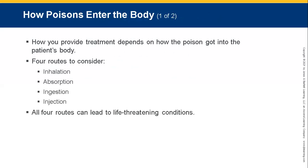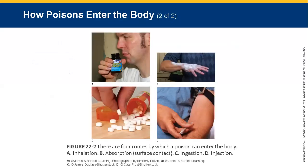How poisoning enters the body is similar to how allergens enter. There are four routes: inhalation, absorption, injection, and ingestion. How you provide treatment depends on how the poison got into the patient's body. All four routes can lead to life-threatening conditions. The faster a substance can reach the bloodstream, the faster the effects will be produced.